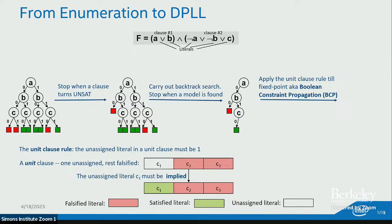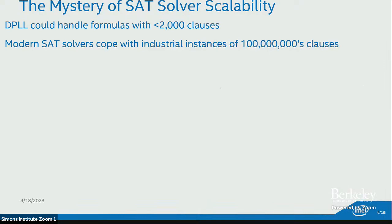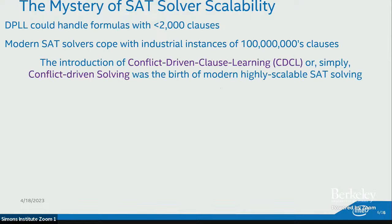Applying the unit clause rule to a fixed point is known as Boolean Constraint Propagation (BCP). The original DPLL algorithm could only handle small formulas with under 2000 clauses, while modern SAT solvers can cope with huge industrial instances of hundreds of millions of clauses. The turning point was the introduction of CDCL — conflict-driven clause learning — which was the birth of modern high-scale SAT solving.